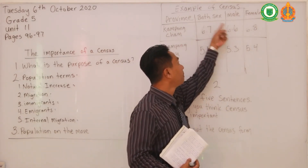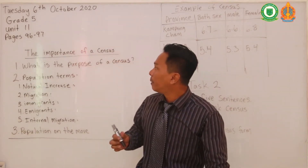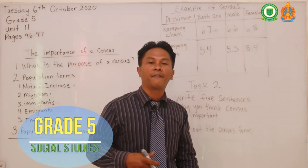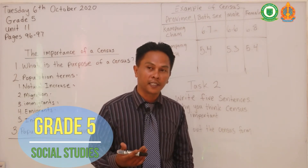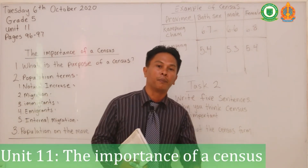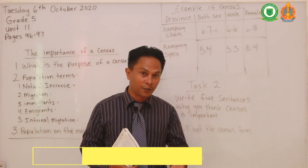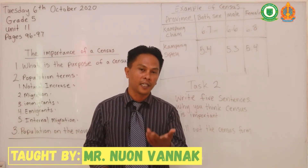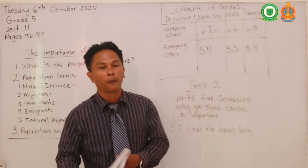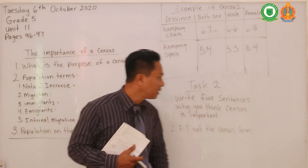You have to look at the top of the table to see what each column represents. As I explained in video one, a census has many categories. There's a household census — it tells you about the family in the household, like how many brothers and sisters you have, how many males and females are in the household. There's also a population census, which can be nationwide or worldwide.